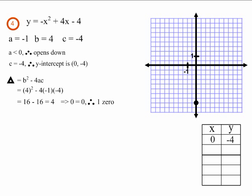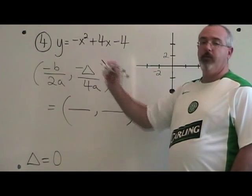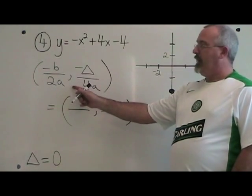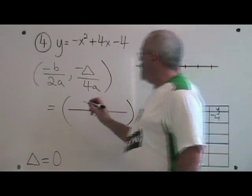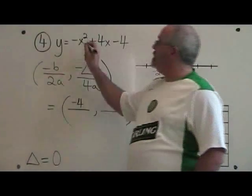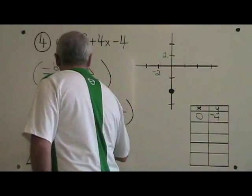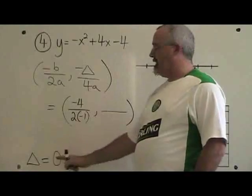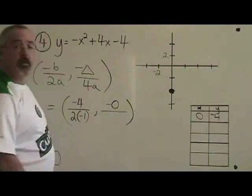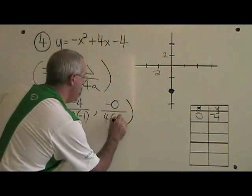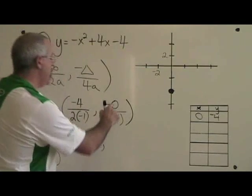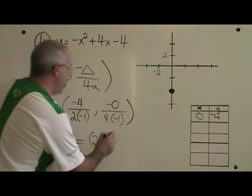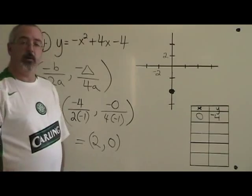This is what example 4 looks like before we find our vertex. To find the vertex of example 4, we use the vertex formula: negative b over 2a, and negative delta over 4a. Negative b means negative 4. 2a means 2 times negative 1. Negative delta means negative 0. And 4a means 4 times negative 1. Negative 4 divided by negative 2 is 2, and negative 0 over 4 times negative 1 simplifies to 0. We have found our vertex and it is 2, 0.